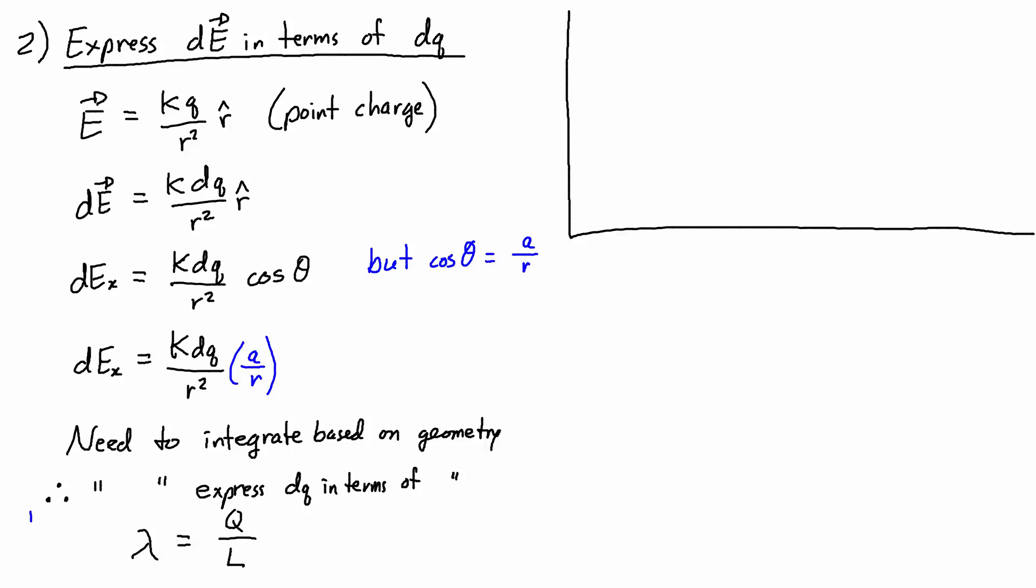And the way I do this is by using something called the linear charge density. That's given the symbol lambda, the linear charge density, and that's equal to the total charge, capital Q, divided by the total length. And in this case, it's the length of the ring, which is equal to the circumference. So then if the linear charge density is equal to the total charge divided by the total length, I can also then say that the linear charge density is equal to a tiny piece of charge divided by the corresponding tiny piece of length. And I'll call that tiny piece of length dl.